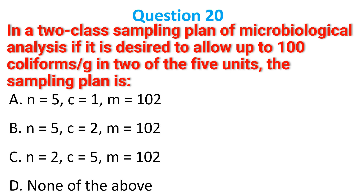In a two-class sampling plan for microbiological analysis, if it is desired to allow up to 100 coliforms per gram in two of the five units, the sampling plan is the correct answer B: n equals 5, c equals 2, and m equals 100.